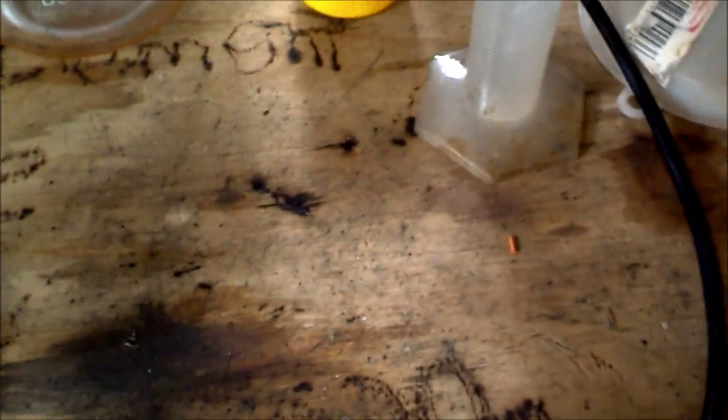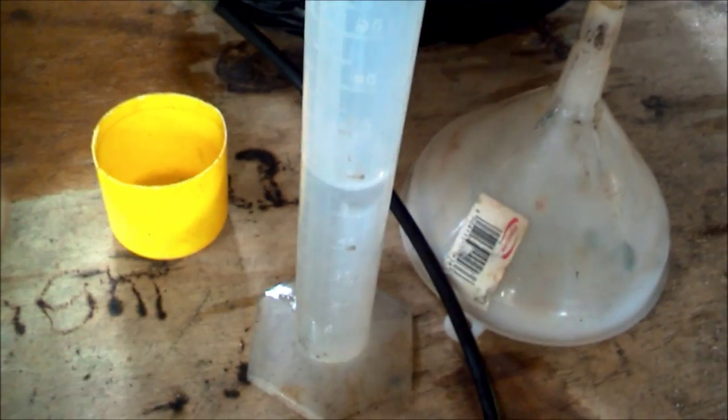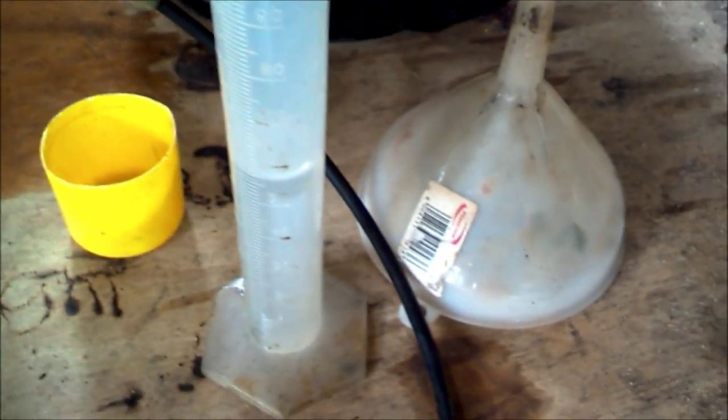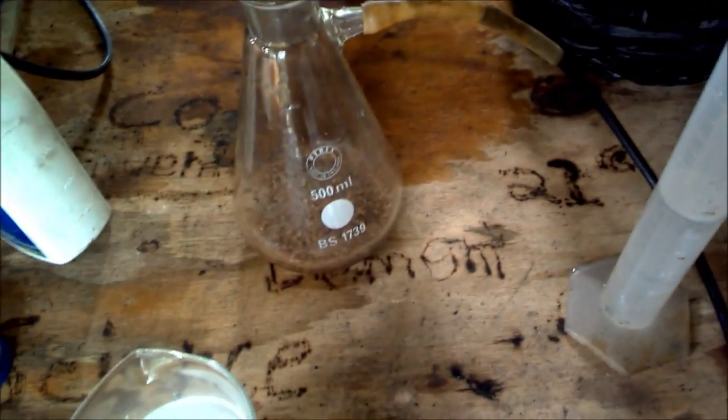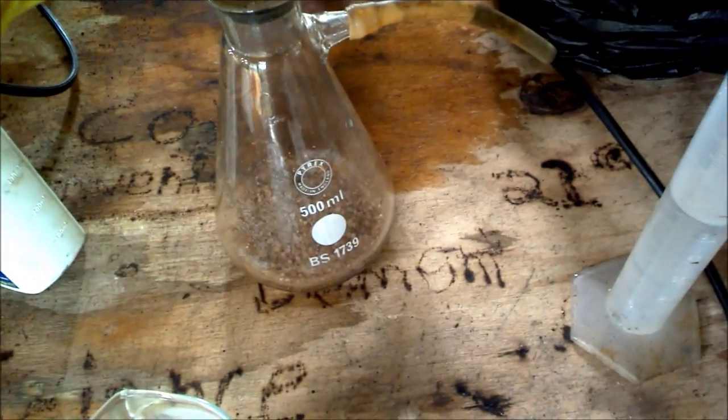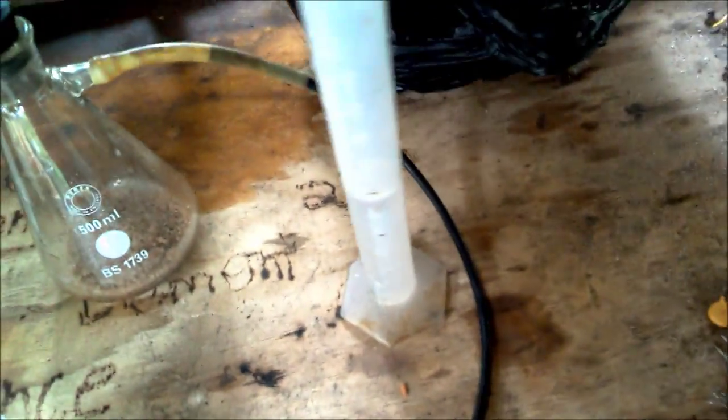Once you've got the solution ready, take some ammonium sulfate and put it into the flask. Place the lid back on the separatory funnel for now. Now make sure it's cool.